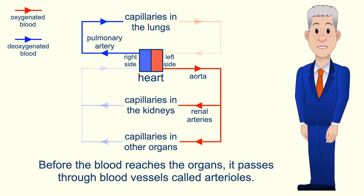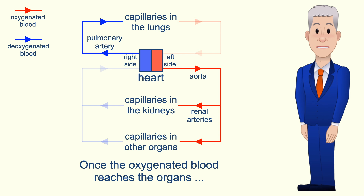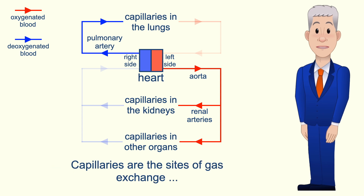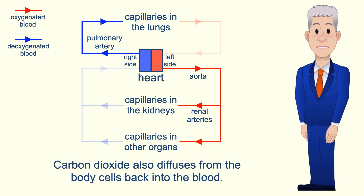Before the blood reaches the organs it passes through blood vessels called arterioles, and we'll be looking at arterioles in the next video. Once the oxygenated blood reaches the organs it passes through very narrow blood vessels called capillaries. Capillaries are the sites of gas exchange, with oxygen diffusing from the blood to the body cells. Carbon dioxide also diffuses from the body cells back into the blood.